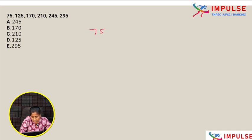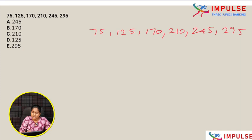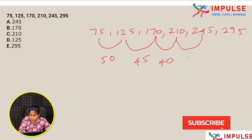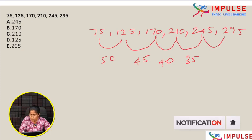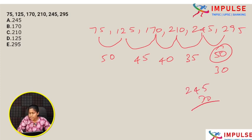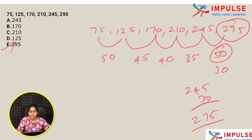Next question: 75, 125, 170, 210, 247, 245, 295. Differences: first to second is 50, second to third is 45, third to fourth is 40, fourth to fifth is 35 — decreasing by 5 each time. So fifth to sixth difference should be 30, meaning 245 plus 30 is 275, not 295. So 295 is the wrong number. Option E.